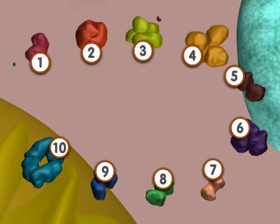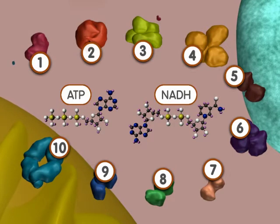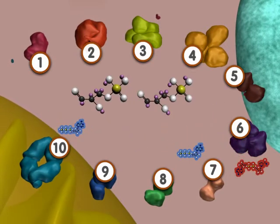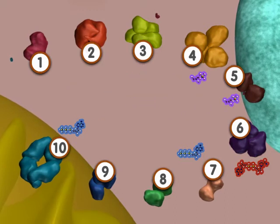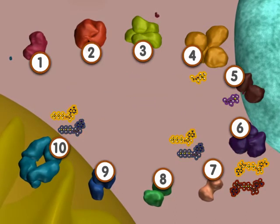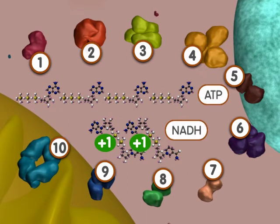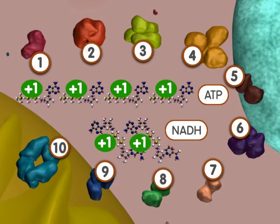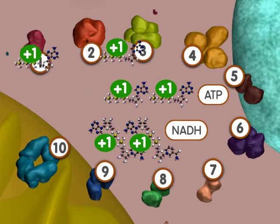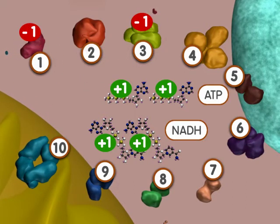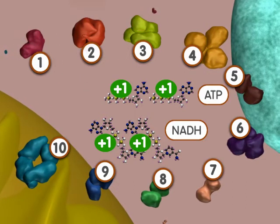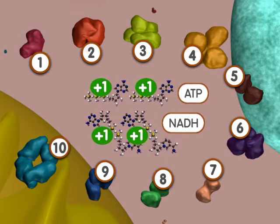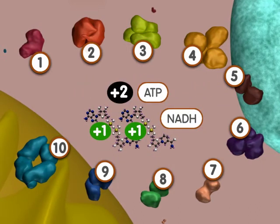It is important to remember that the products in steps 6 through 10 are formed for each of the glyceraldehyde-3-phosphate molecules generated in steps 4 and 5. This means that a total of two NADH and four ATPs are made in glycolysis. Because two ATPs were spent in the early steps of the pathway, glycolysis results in a net of two ATPs.